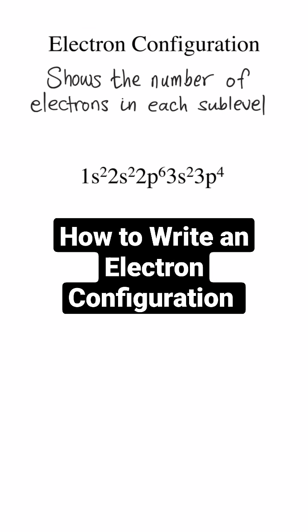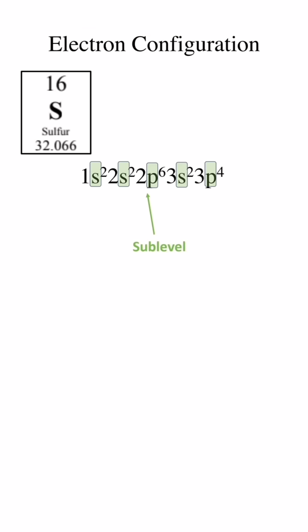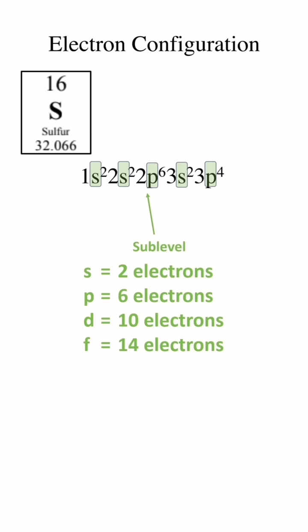An electron configuration shows the number of electrons in each sublevel. The sublevels are represented by a letter. The S sublevel can hold a max of 2 electrons, the P can hold 6, the D can hold 10, and the F can hold 14 electrons.